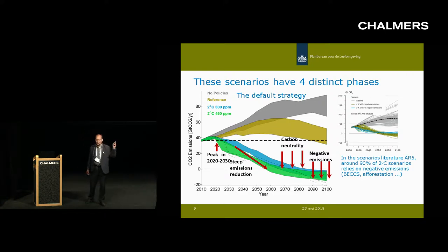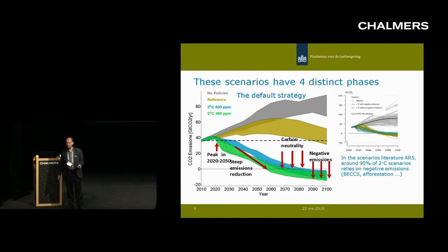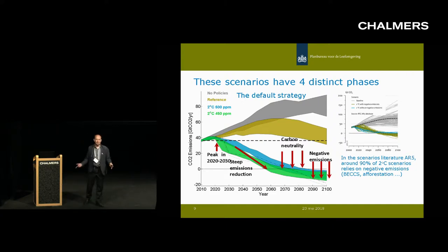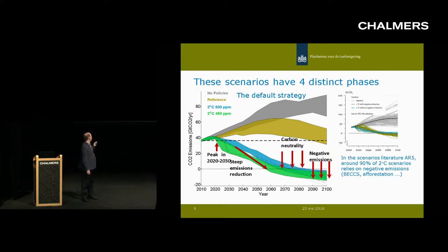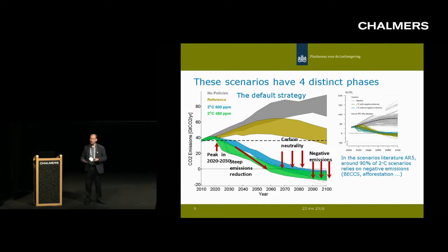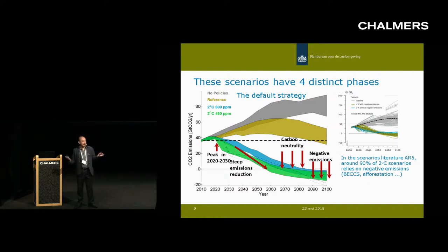Looking at the literature from AR5, about 90% of the scenarios published at the time for two degrees use this strategy. Only around 10% of the scenarios had no net negative emissions. I don't think that has changed — it might even be higher by now.